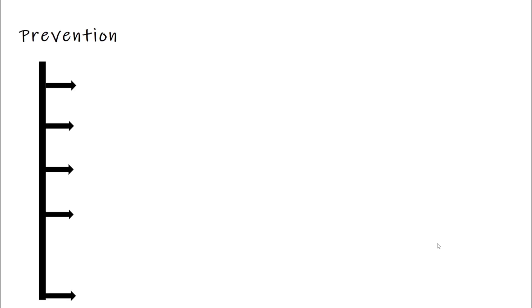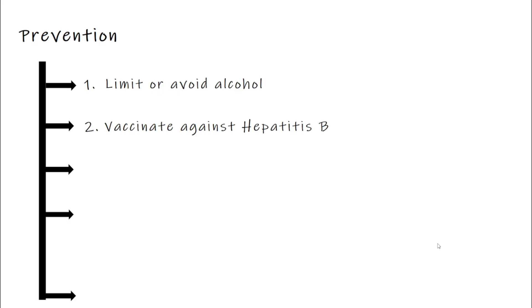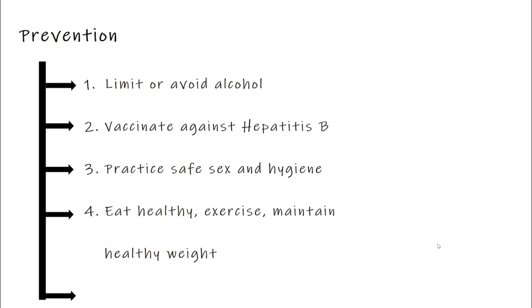Now let's talk about prevention, because stopping liver cirrhosis before it starts is the best approach. Avoid alcohol completely — your liver can only take so much over time. Get vaccinated against hepatitis B — it is safe, effective, and protects your liver. Practice safe sex and good hygiene to reduce the risk of viral hepatitis. Eat a balanced healthy diet, exercise regularly, and maintain a healthy weight to help prevent fatty liver disease. If you have risk factors like hepatitis or obesity, get regular checkups to catch liver problems early.